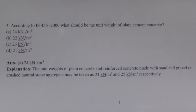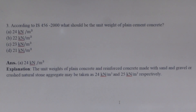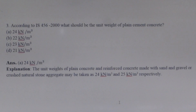Next question: According to IS 456-2000, what should be the unit weight of plain cement concrete? As per IS 456-2000, the unit weight of plain cement concrete is 24 kilo newton per cubic meter, and the unit weight of reinforced cement concrete is 25 kilo newton per cubic meter.